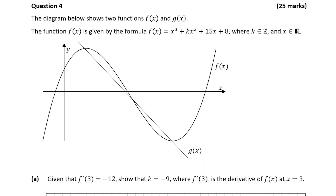This question overall is worth 25 marks, broken down into three parts: part A worth 15 marks, part B worth 5 marks, and part C worth 5 marks. The question gives us two functions f(x) and g(x). The function f(x) is given by f(x) = x³ + kx² + 15x + 8, where k is an integer and x is a real number.